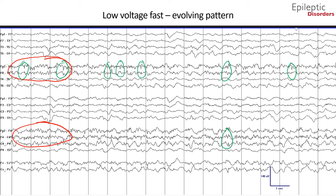There is also spatiotemporal evolution with the right hemispheric chains—specifically the central parietal regions becoming involved with higher-amplitude delta activity that becomes quasi-rhythmic initially and later becomes more rhythmic at 1 Hz towards the end of the epoch, outlined in the green circle and star.